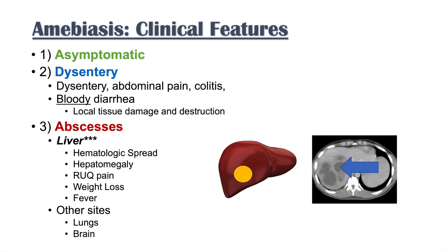So these are the three clinical scenarios with Entamoeba histolytica infection. One: you may be completely asymptomatic if your immune system clears the infection. Two: you might have amoebic dysentery with abdominal pain, colitis, and bloody diarrhea due to tissue damage. Three: you may develop amoebic abscesses, most commonly in the liver, but also possibly in the lungs and the brain.